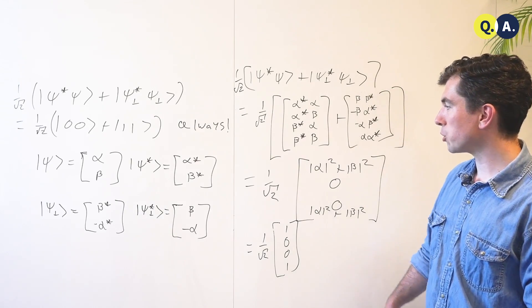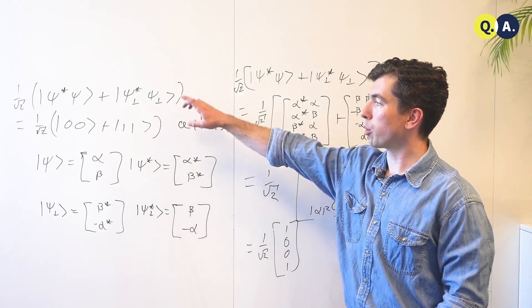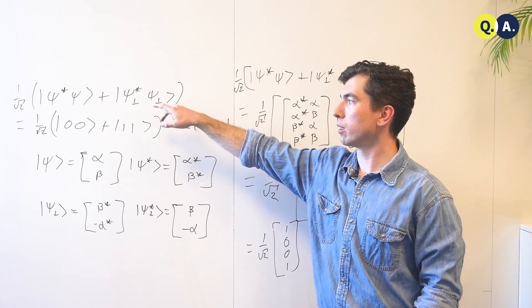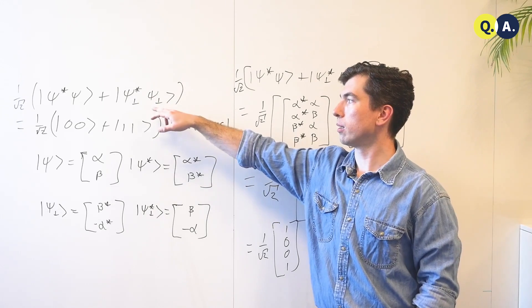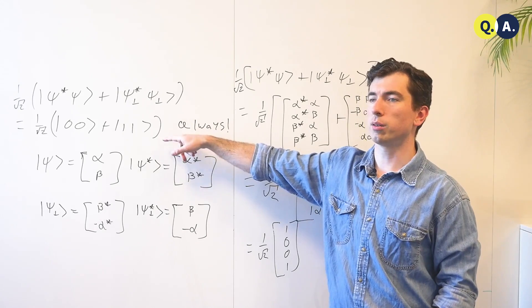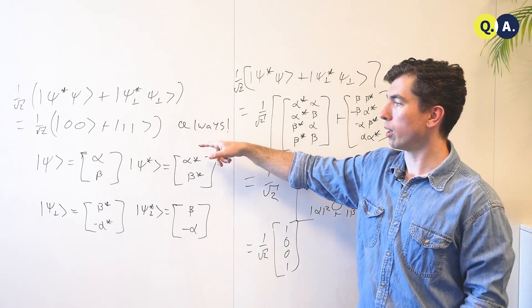Here we can see a not-too-bad example with two qubits, where we're going to prove that for any maximally entangled state of the form psi star psi plus psi perp star psi perp, it's always equal to the bell state that's fully correlated that we know and love.